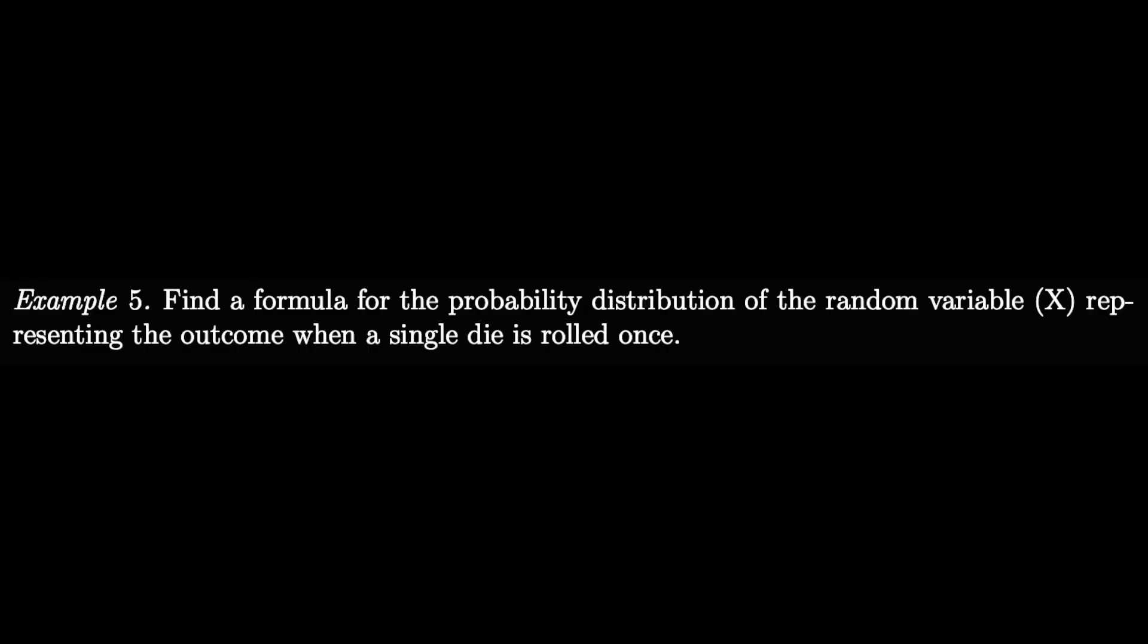Now here we have example five, where it says find a formula for the probability distribution of the random variable X representing the outcome when a single die is rolled once.